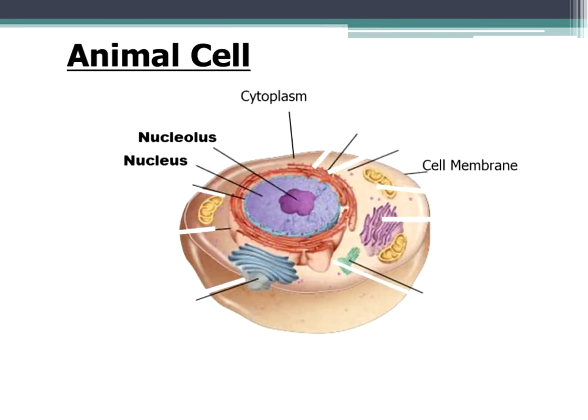Remember, that's animal cells, plant cells, and fungus cells. But we're going to look at just the animal cells first. We're going to take these four — the nucleus, nucleolus, cytoplasm, and cell membrane — and talk about those first.